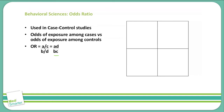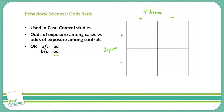Let's take our standard 2 by 2 table and apply an example. The top row is positive or negative for disease, and the side is positive or negative for exposure. We'll use a case where 20 out of 30 lung cancer patients and 5 out of 25 healthy individuals reported smoking. So 10 lung cancer patients never smoked and 20 healthy patients never smoked.